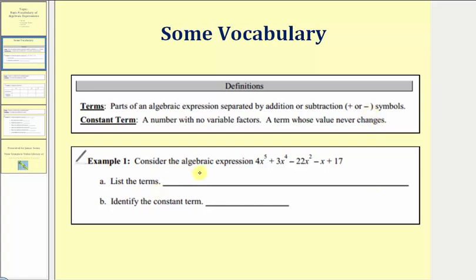For example one, we're given the algebraic expression four x to the fifth plus three x to the fourth minus 22 x squared minus x plus 17. We're first asked to list the terms — those are the parts separated by addition or subtraction. Notice how we have five terms.